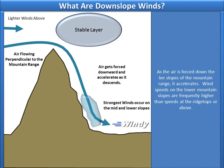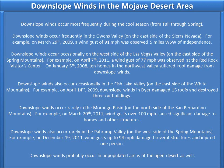As the air is forced down the lee slopes of the mountain range, it accelerates. Wind speeds on the lower mountain slopes are frequently higher than speeds at the ridgetops or above. Downslope winds in the Mojave Desert area occur most frequently during the cool season from fall through spring.